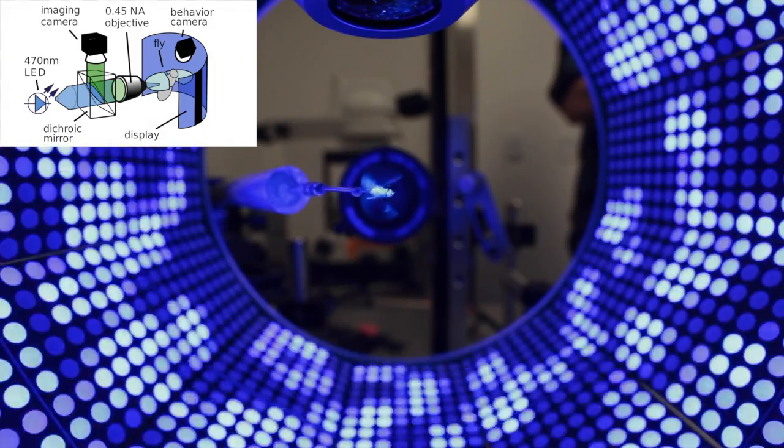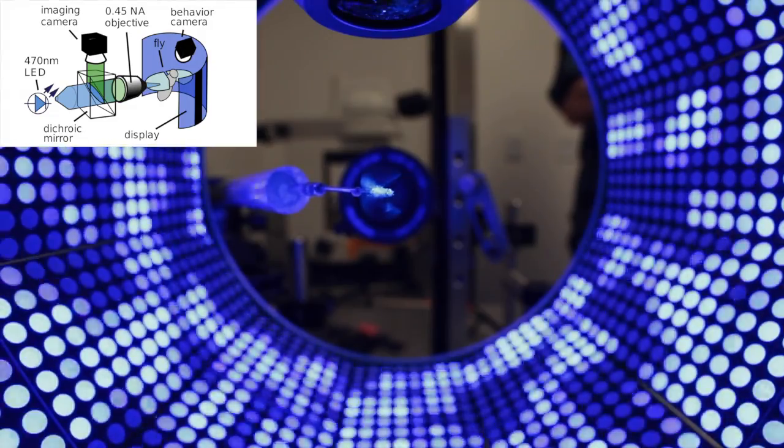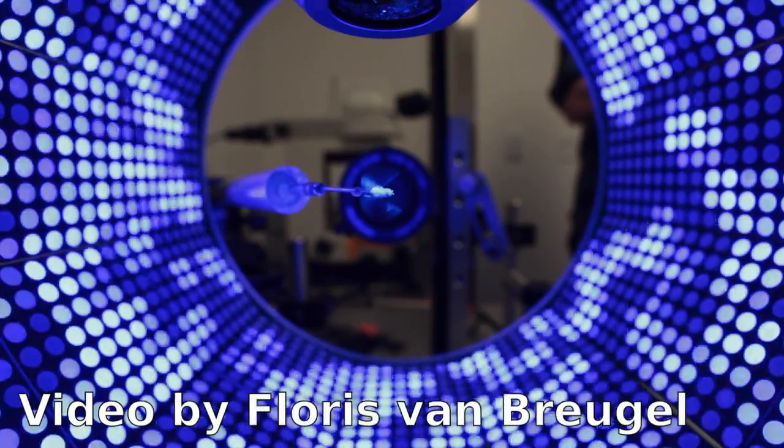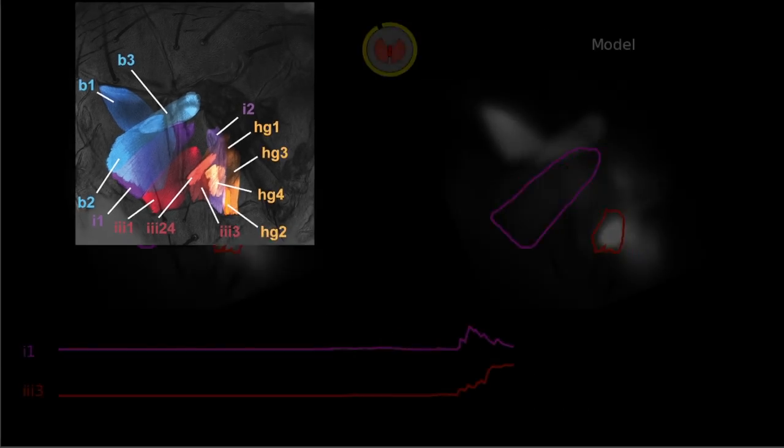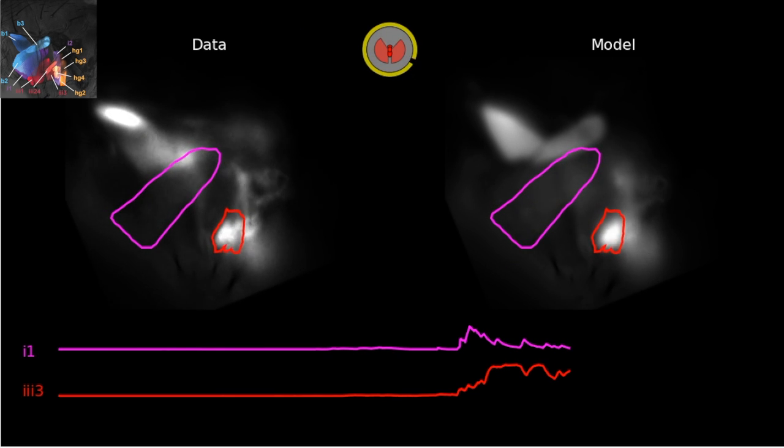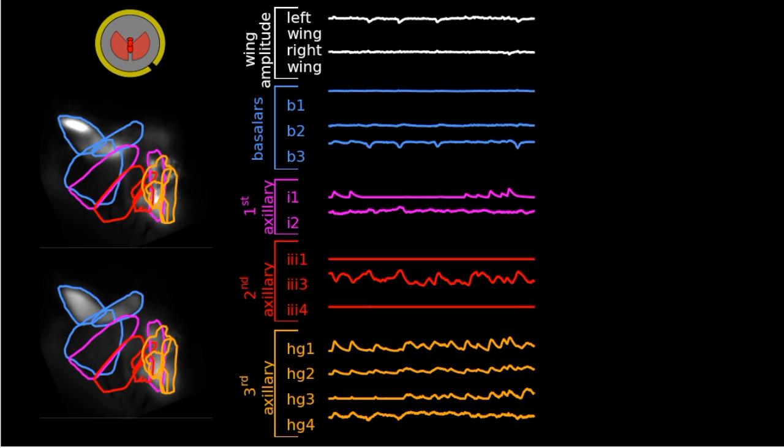In each experiment, we glued these flies to a fine metal pin, placed them in a virtual reality flight simulator, and focused a microscope on their thorax near the location of their flight muscles. Using a three-dimensional model of the fly's musculoskeletal anatomy and movies of the thorax fluorescence, we could extract sequences for the activity of each muscle over time.